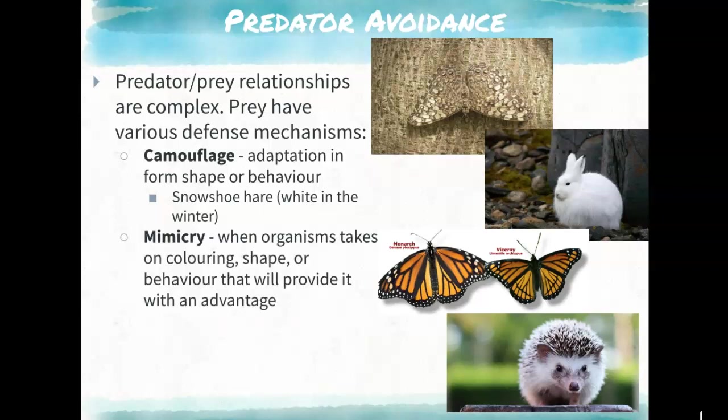Mimicry is when an organism pretends to look like another organism — using a similar coloration, shape, or behavior to gain an advantage. Usually they're mimicking something that doesn't taste good, or is poisonous or venomous. For example, another butterfly species looks very similar to the monarch butterfly, which tastes really bad to birds, so the mimic hopefully won't get eaten either.